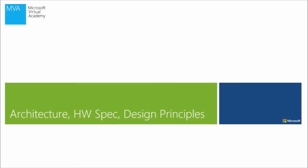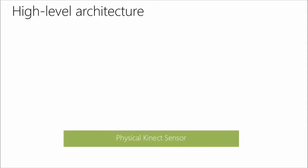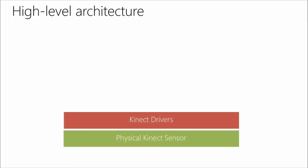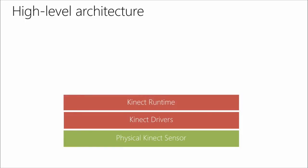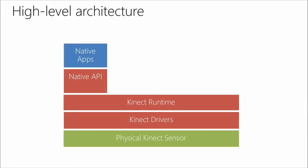Before going into details, let's talk about the architecture. At the bottom of the stack you have the physical Kinect sensor, then the drivers — we take care of those behind the scenes. Next is the Kinect runtime, where we manage data from the driver, run the various tracking engines, produce infrared, depth, and skeleton data, and make it available to all apps on the system. On top of that, we have native APIs for native apps, .NET APIs for .NET apps, and a Windows Runtime API for Windows Store apps in all languages.